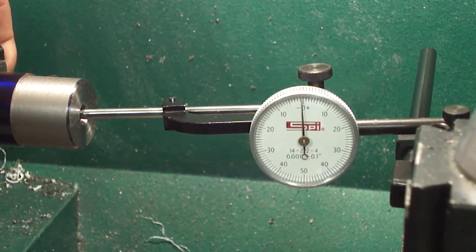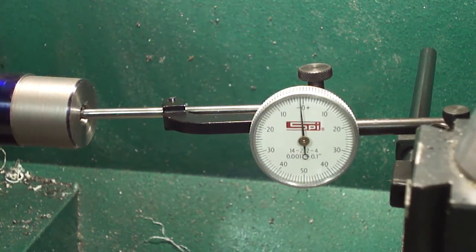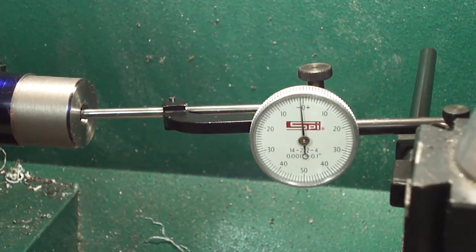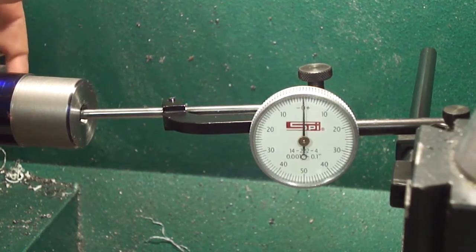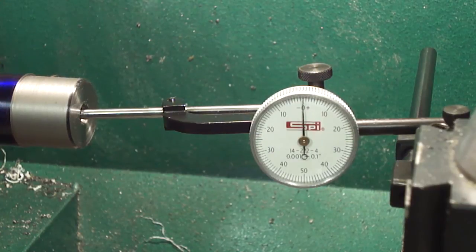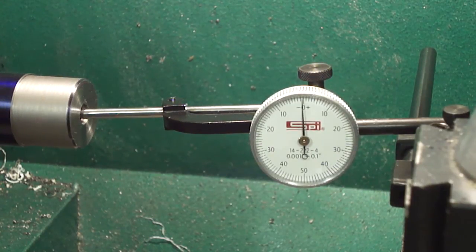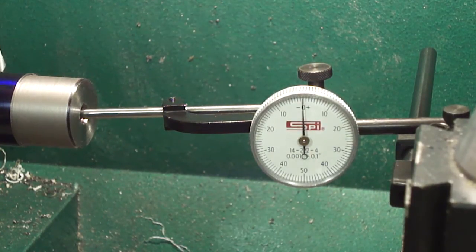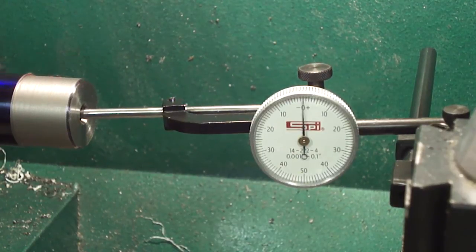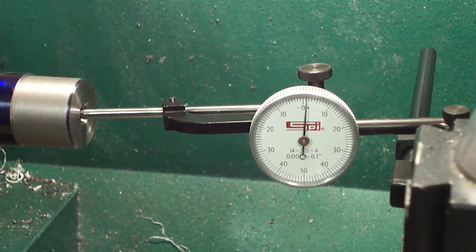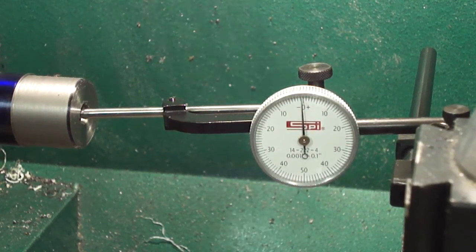Once I zero that out, as I spin the headstock you'll see it jumps up, drops back down repeatedly. What we want to make sure of is that the needle is dropping down to the same spot every time it comes off the lands in the barrel.